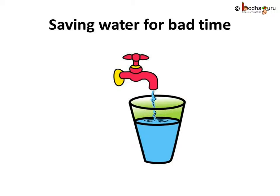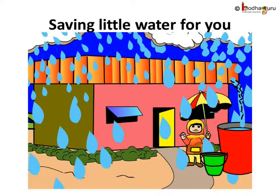How do we do that? As a kid, you can help too. Rain water can be collected in small buckets. It can be used to water plants, or wash your bicycle or even your father's motorcycle or car. Wouldn't it be fun?